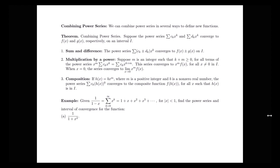We have three properties to discuss. First, suppose I have two different convergent power series: a series with sum of c_k x to the k that converges to some function f of x, and a power series sum of d_k x to the k that converges to g of x. Then, because those two power series are convergent, the sum of c_k plus or minus d_k times x to the k converges to f of x plus or minus g of x.